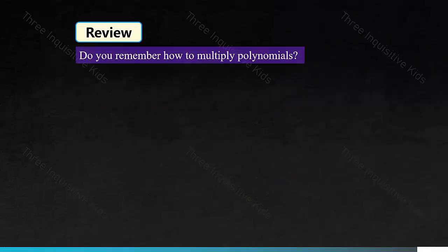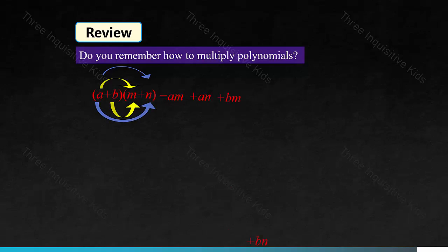Here's some review. Do you remember how to multiply polynomials? The sum of a and b times the sum of m and n uses the distributive property of multiplication. The terms would be am, an, bm, and bn. For example, x plus 3 times x plus 5 equals x squared plus 5x plus 3x plus 15, and you can combine the like terms to get x squared plus 8x plus 15.